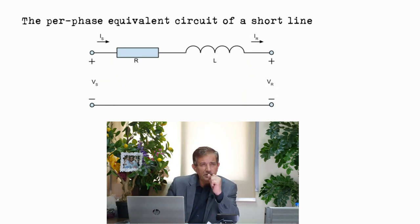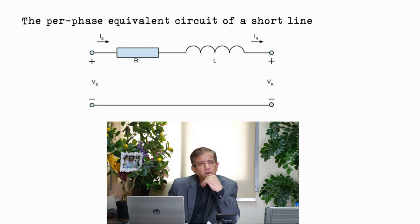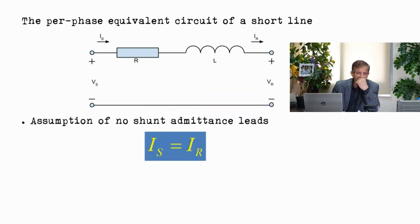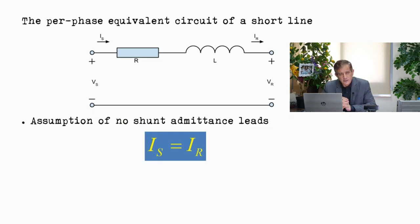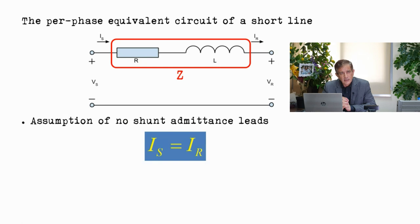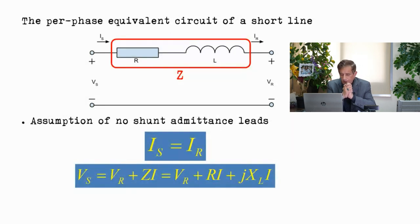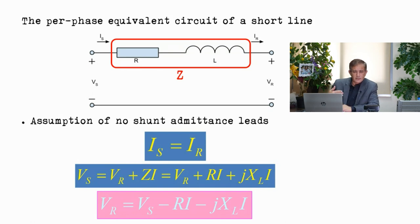For the short line with capacitance removed, it is clear that the sending-end current IS equals the receiving-end current IR — there are no shunt nodes at the beginning and end of the line. Based on that, if Z = R + jX_L is the impedance, we can write a simple Kirchhoff voltage equation: VS = VR + I·Z.